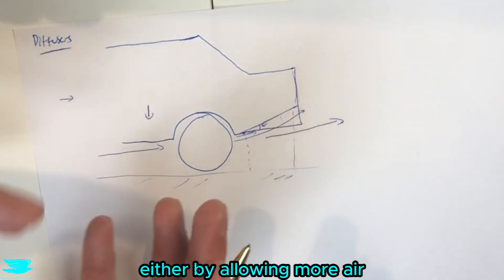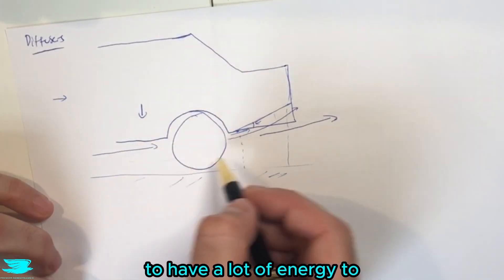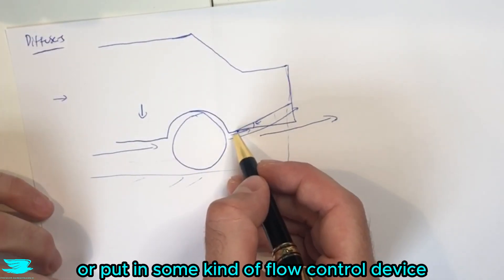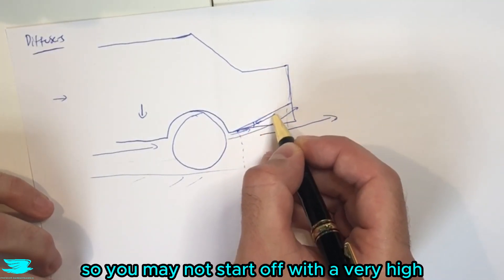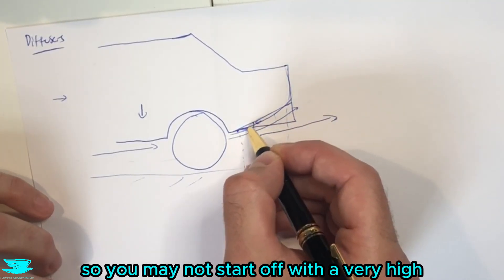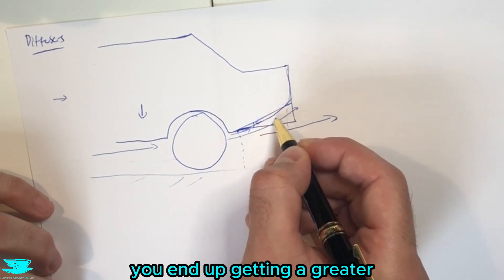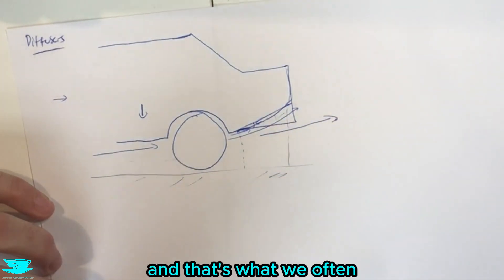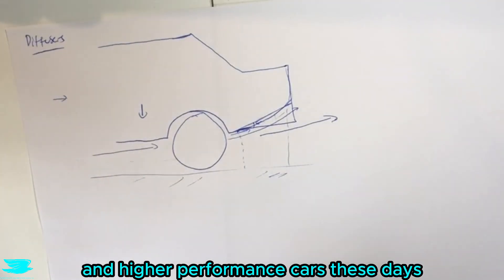That's either by allowing more air to come from upstream or elsewhere to have a lot of energy to stay attached along here, or put in some kind of flow control device to allow that to happen, or you can even curve this diffuser. So you may not start off with a very high angle of attack here but as you curve the diffuser up you end up getting a greater angle of attack, and that's what we often see on more sports car and higher performance cars these days.